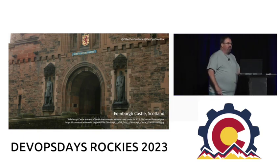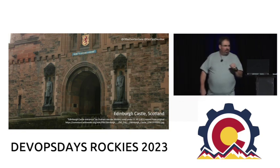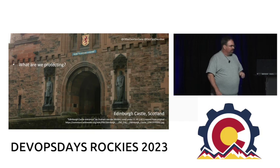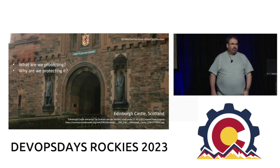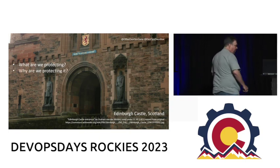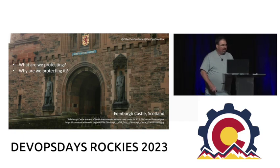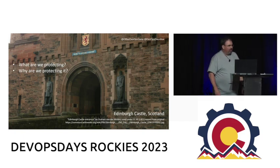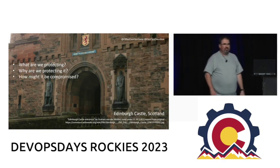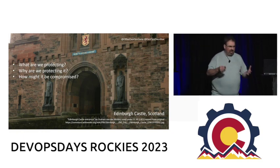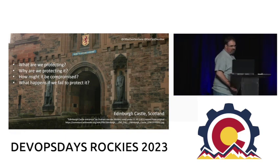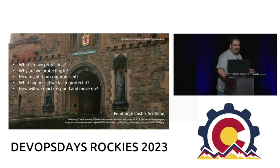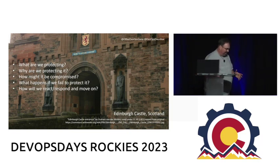There are a couple questions we really have to look at when deciding what type of effort and measures we're going to put into place. First, what are we protecting - is this something the cheeto is good enough for, or are we looking for vault doors? Why are we protecting it? What is someone going to gain if they get in? What's the impact to us if something does happen? How might it be compromised - how could an attacker get what they need? What happens if we fail to protect it? And finally, how will we react, respond, and move on if it does get attacked?